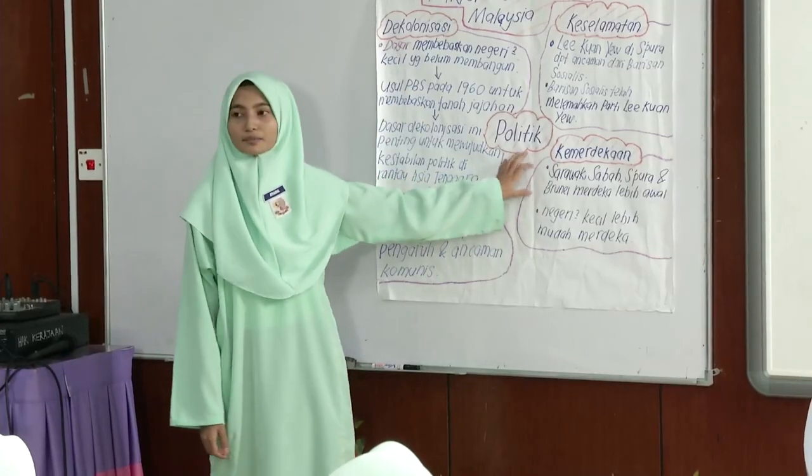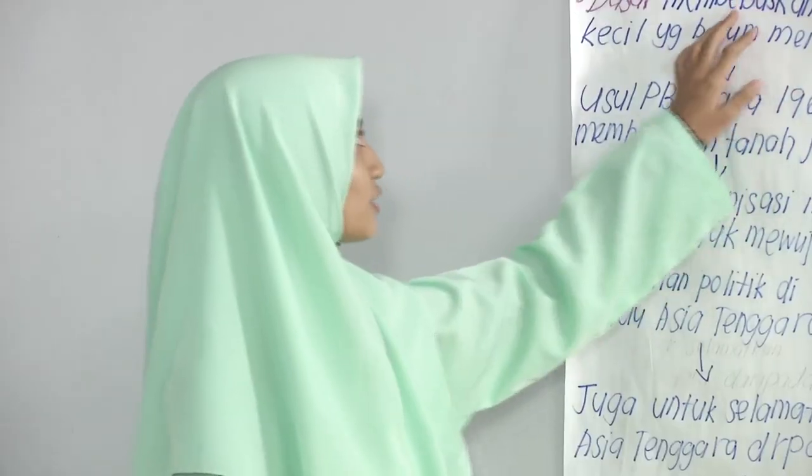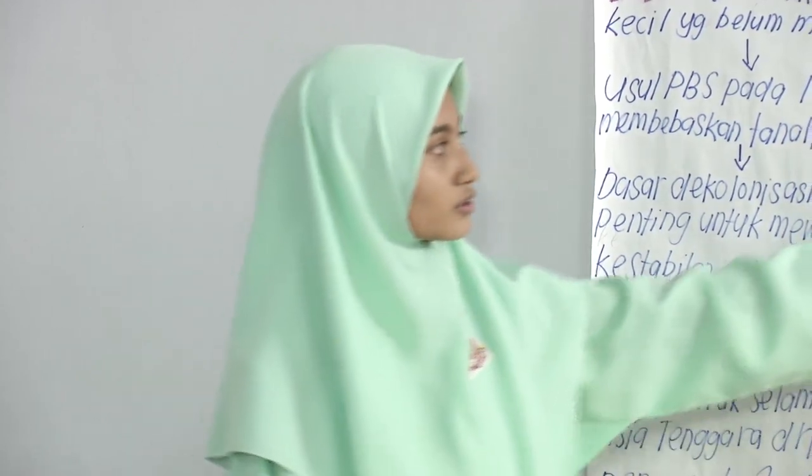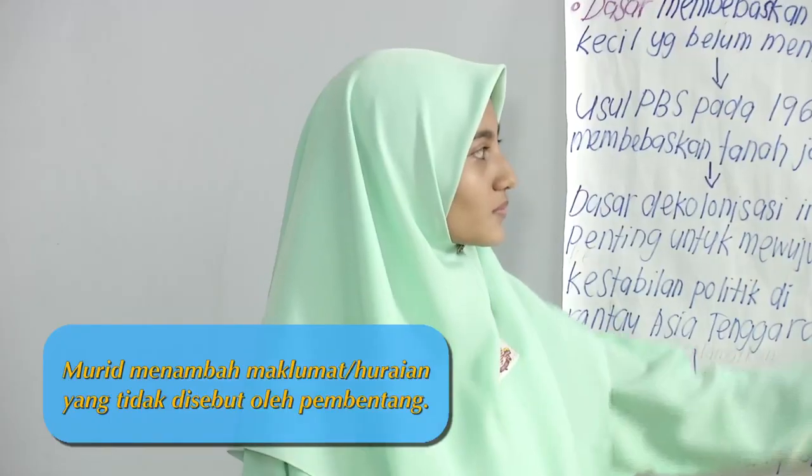Assalamualaikum dan selamat sejahtera. Saya ingin membentangkan tentang faktor-faktor pembentukan Malaysia dari segi politik. Dari segi politik, terdapat tiga aspek iaitu dekolonisasi, keselamatan dan kemerdekaan. Dari segi keselamatan, Lee Kuan Yew di Singapura mendapat ancaman dari barisan sosialis. Kebangkitan sosialis telah melemahkan parti Lee Kuan Yew, iaitu Parti Tindakan Rakyat. British juga risau dengan ancaman komunis di Sabah, Sarawak dan Brunei.